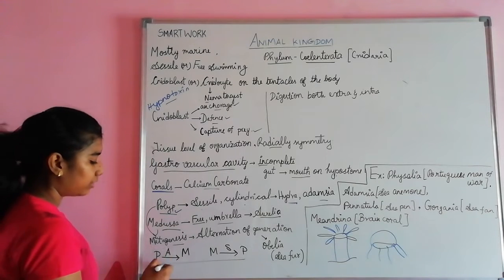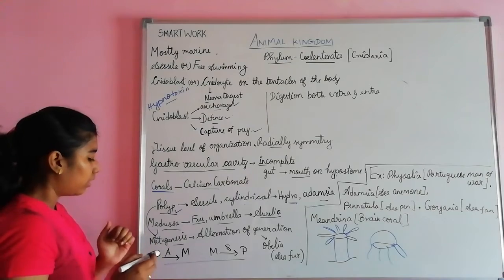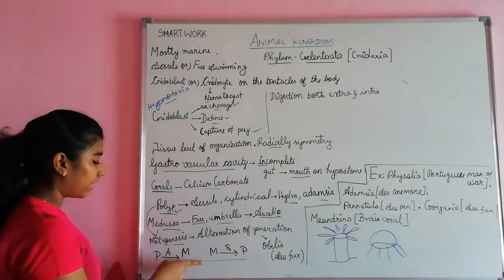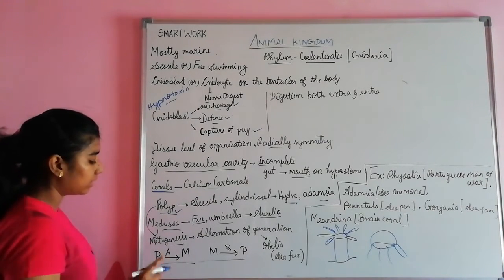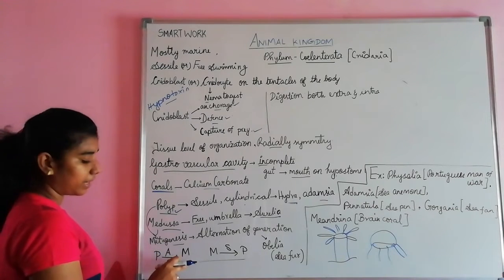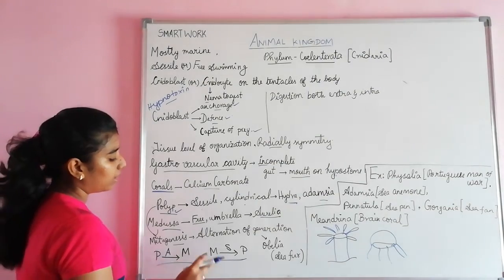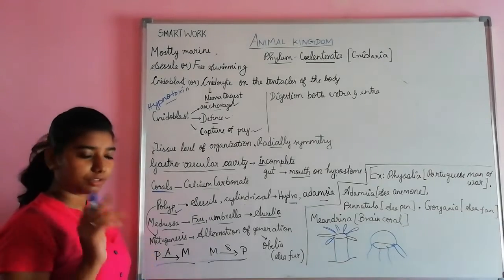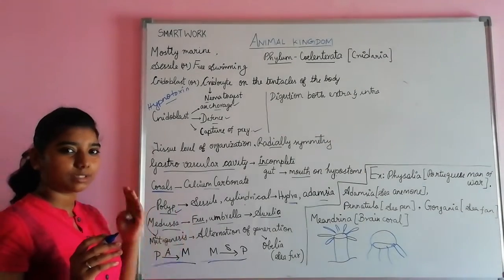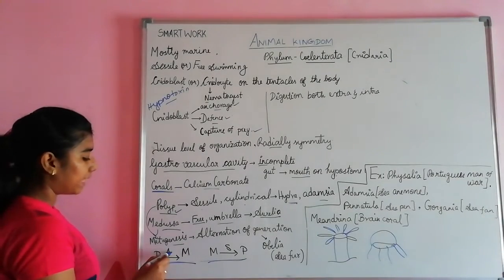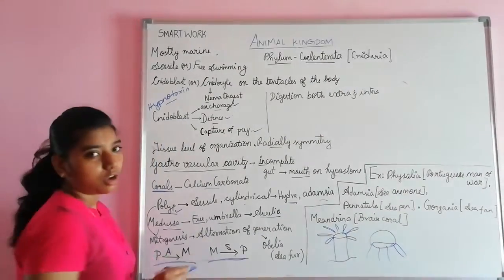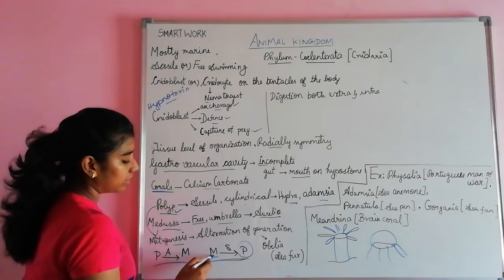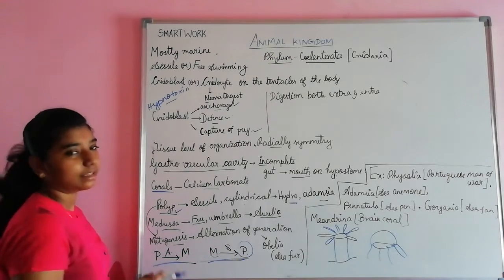Here is a simple trick to remember what reproduces sexually and asexually. PALM: Polyp Asexually reproduces into Medusa. And MSP — like MSD but with P — Medusa Sexually reproduces into Polyp. This is the trick to remember.